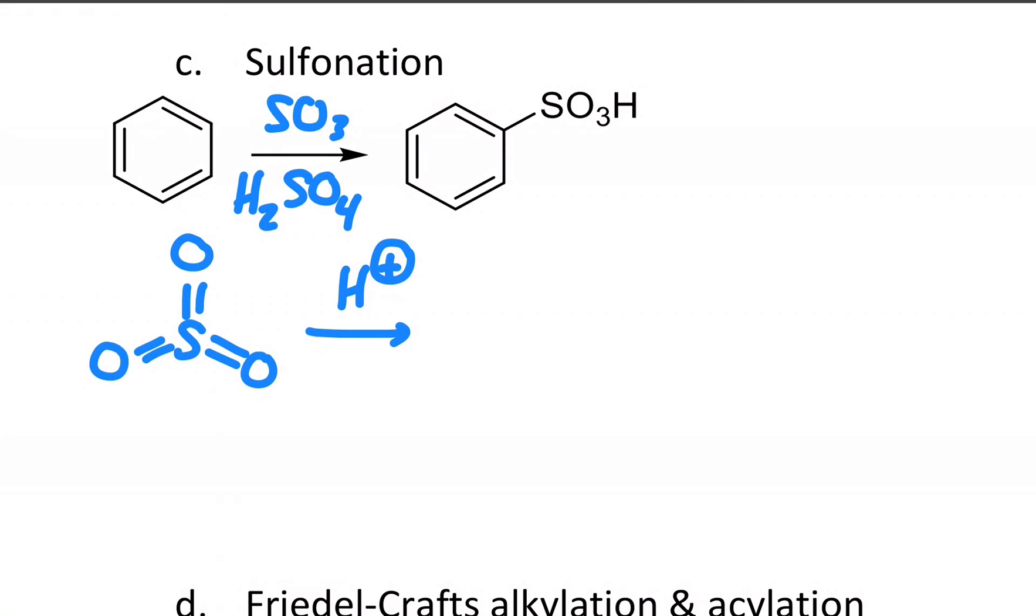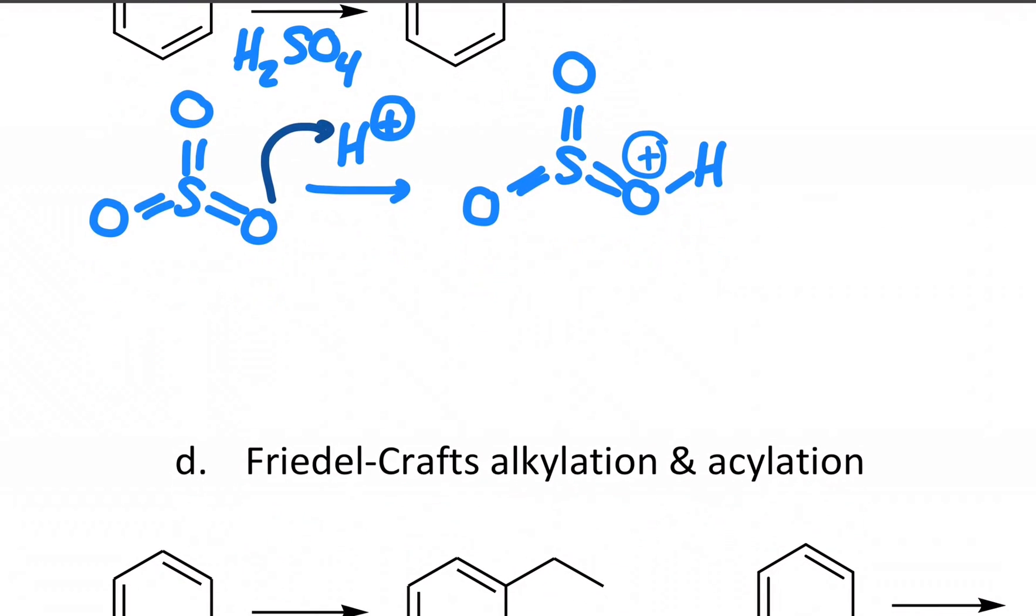Okay, so sulfur trioxide just protonates. One of the oxygens can pick up an H and you'll get protonated sulfur trioxide. And that's actually the active electrophile. That's it. That's what benzene sees.